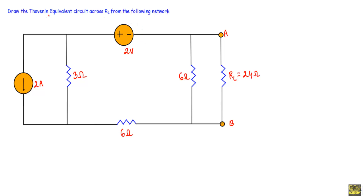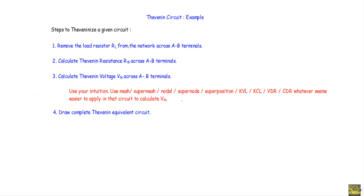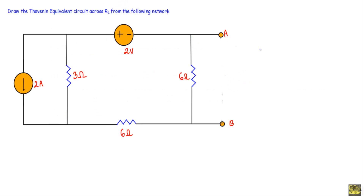In this video I will show you another example of a Thevenin equivalent circuit. Draw the Thevenin equivalent circuit across the load resistor RL from the following network. These are the steps I will follow. At first I will remove the load resistor RL and separate it from the network. This is our load resistor RL which is equal to 24 ohm. We have to draw the Thevenin equivalent circuit with respect to the A and B terminals.